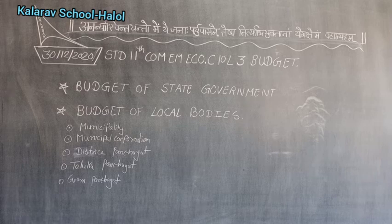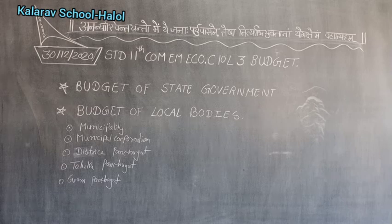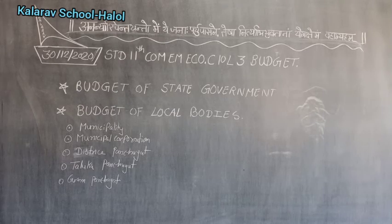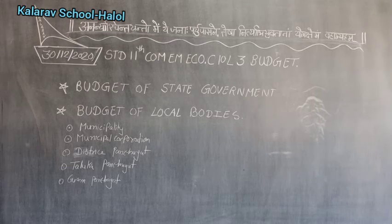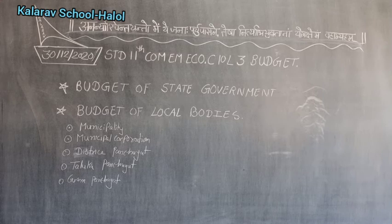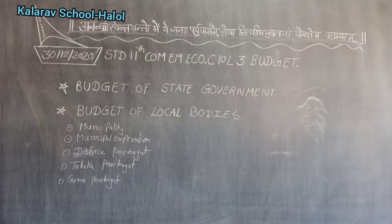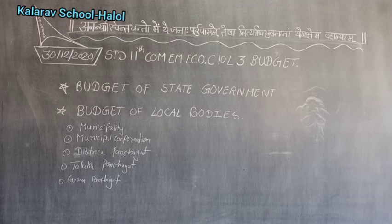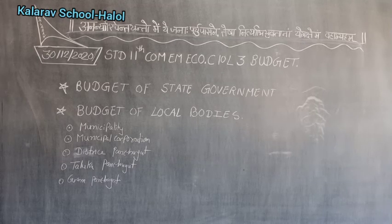Panchayati Raj institution is the oldest method of local government in India and its subcontinent. Panchayat is an assembly in India for rural administration. District panchayat, taluka panchayat, and gram panchayat are part of the three-layer government according to the Constitution of India. Panchayats in their respective areas can prepare a plan of economic development, because local bodies know what their requirements are — it is not decided by the state. Different states have various forms of Panchayati Raj institution.